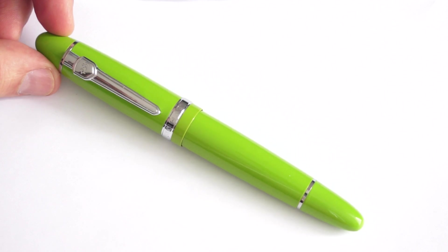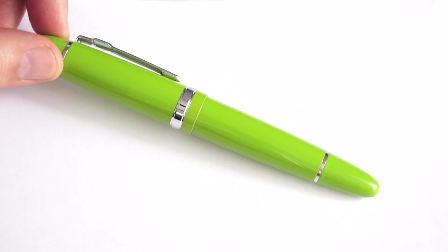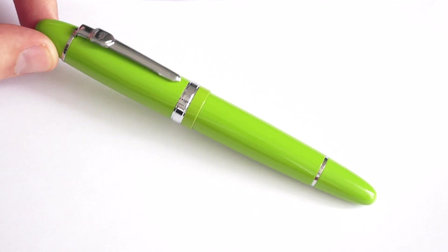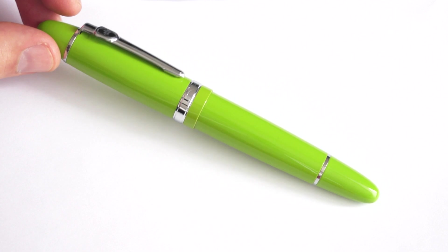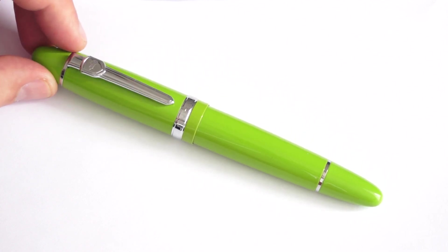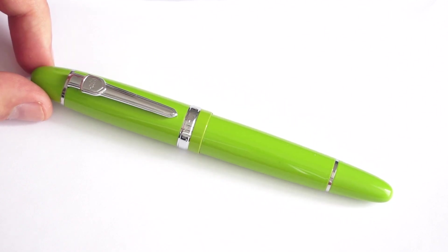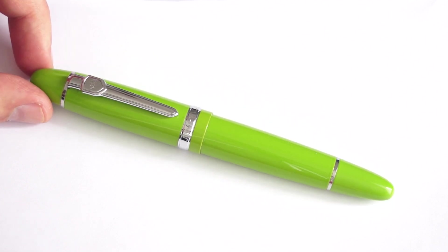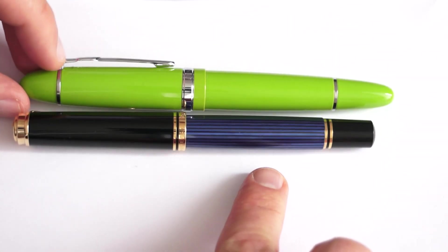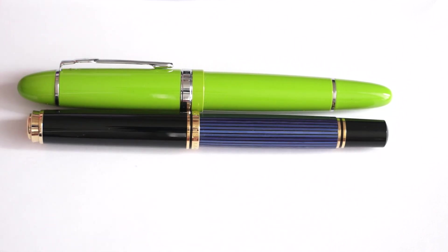These pens come in a variety of colors and trims. This particular one is an apple green color with chromium trims and it's a rather large pen. It's on par with Mont Blanc 146 Meisterstück, and here for comparison with a Pelikan M800, you see it's a little bit longer and girthier.